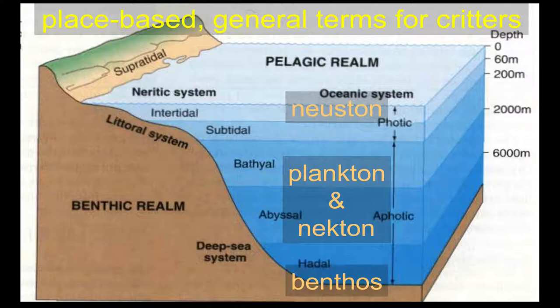Now I want to give you some terms for critters — for organisms — for the biological resources that are so important in our discussions of the management of the ocean. These are terms for organisms that live in and around the ocean. At the bottom, just like with the location term, we have the benthic or the benthos. A critter that lives attached or right next to or swimming just above the bottom, and is almost always there, we would refer to as a benthic organism. If we're talking about the group of critters there, we talk about them being the benthos.